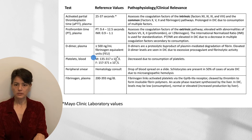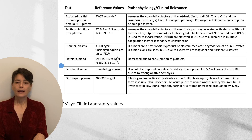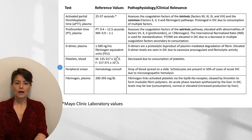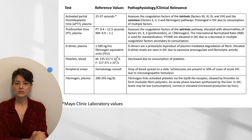Another test to order when suspicious for DIC is D-dimers, measured from the patient's plasma. D-dimers are a proteolytic byproduct of plasmin-mediated degradation of fibrin, and we tend to see them elevated in DIC. You'll also do a full CBC — because of consumption, you'll see decreases in platelet counts. You'll also want a peripheral smear: a pathologist or technician reviews a drop of blood on a slide looking for schistocytes, which indicate microangiopathic hemolysis.